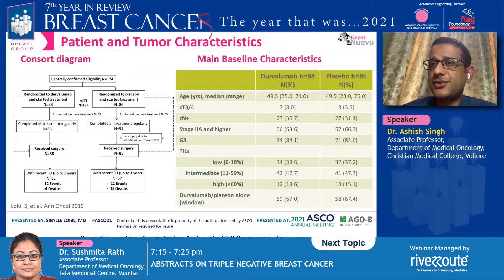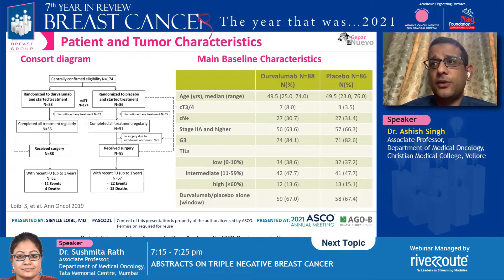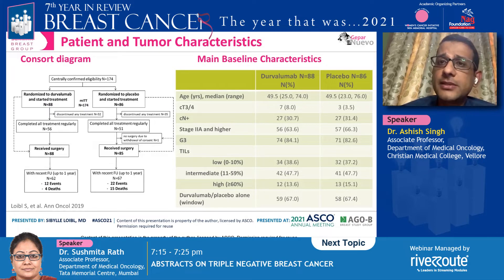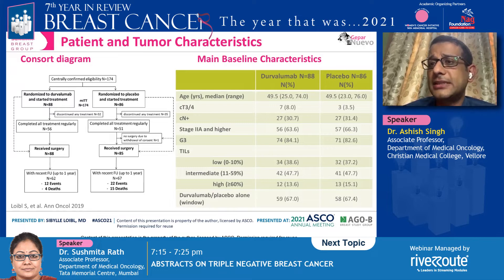This is an early breast cancer trial, so the disease and patient characteristics were as expected — all triple-negative breast cancer, almost 84% grade 3, node-positive patients about 30%, and T3/T4 only about 8%. Looking at the consort figure, about 88 patients went into the Durvalumab arm and all had surgery, while of 86 patients in the placebo arm, one refused surgery. At follow-up, there were 12 events in the Durvalumab arm and 22 events including 15 deaths in the placebo arm.